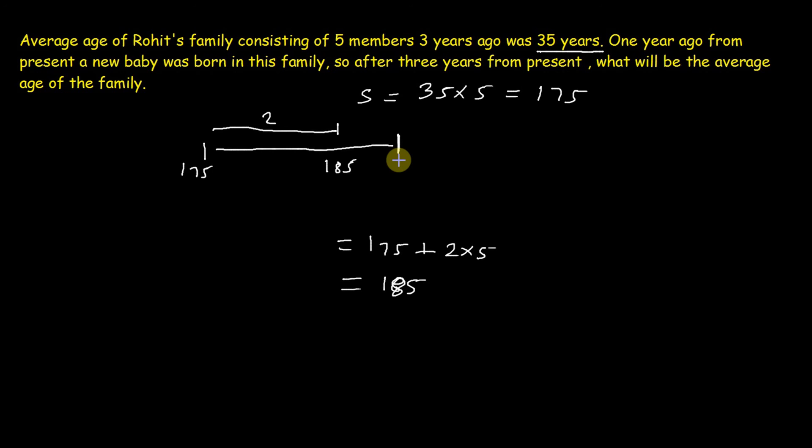Now at this point a new baby born. So at present time there are 6 members in the family. So total age would be 185 plus 6 equal to 191. We have added 6 because now members are 6 and their ages are increased by 1 year. So total 6 years increase.